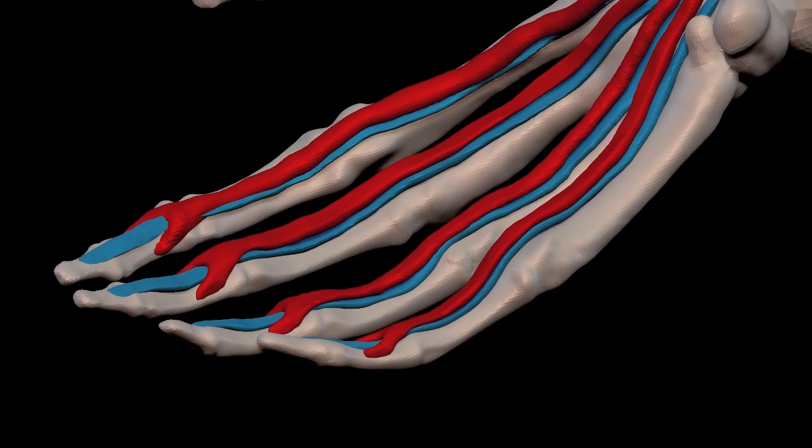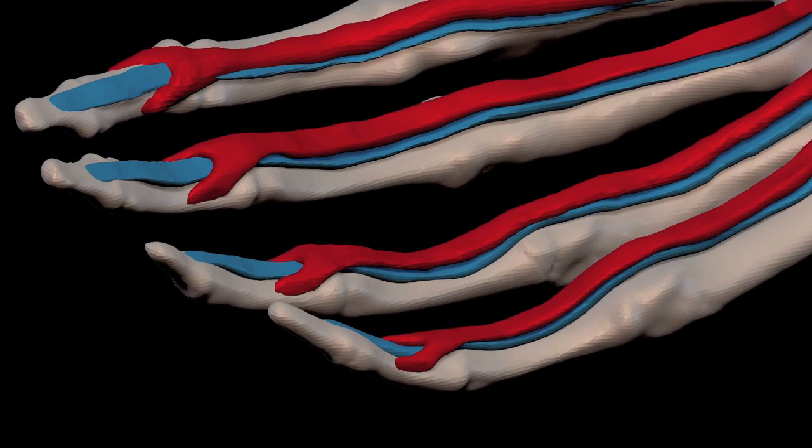Looking closely, we can see that the superficialis tendon separates and creates a little tunnel for the deep tendon to go through. Let's take some time to observe this.